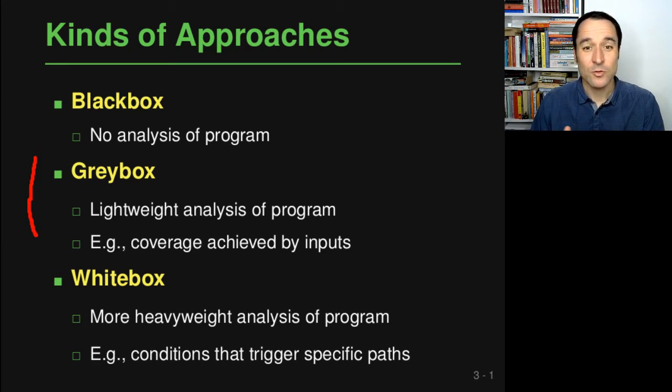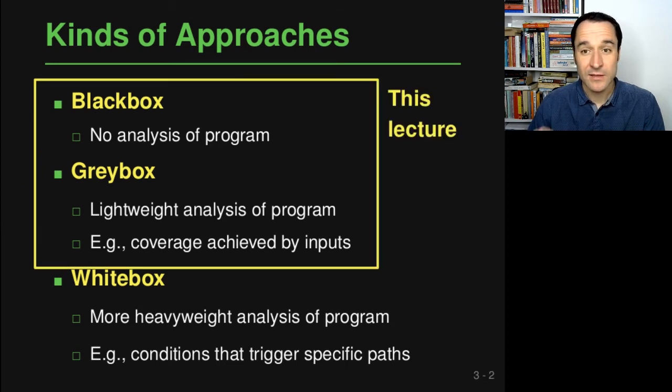The approach in the middle is called greybox testing because it takes a bit of a look into the program by doing a lightweight analysis of the program. For example, a dynamic analysis that looks at how much coverage a particular input is achieving - which statements or branches or maybe paths of the program are actually covered if you run it with a particular input. Then you can use this information to change the input so that you can maybe get more coverage.